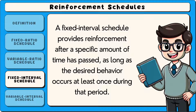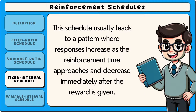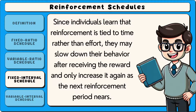A fixed interval schedule provides reinforcement after a specific amount of time has passed, as long as the desired behaviour occurs at least once during that period. For example, a worker might receive a paycheck every two weeks, regardless of how much work they complete during that time. This schedule usually leads to a pattern where responses increase as the reinforcement time approaches and decrease immediately after the reward is given. Since individuals learn that reinforcement is tied to time rather than effort, they may slow down their behaviour after receiving the reward and only increase it again as the next reinforcement period nears.